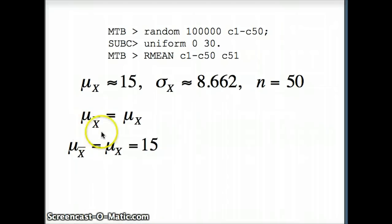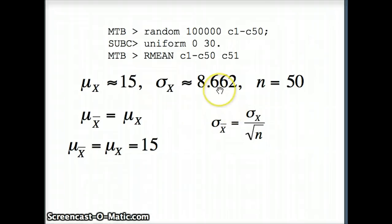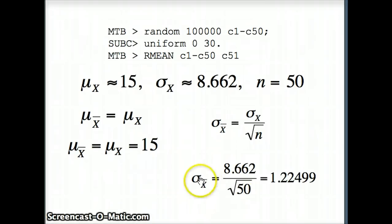Our rule tells us the mean of the x-bars equals the underlying mean, which was 15, so the average of averages should also be about 15. The standard deviation of averages should be the underlying standard deviation divided by the square root of N: 8.662 divided by the square root of 50, which is about 1.22499. This is what the Central Limit Theorem predicts, and we'll check if our data reflects those numbers.